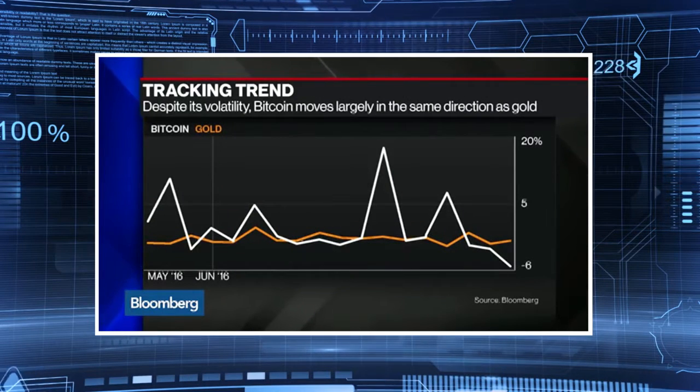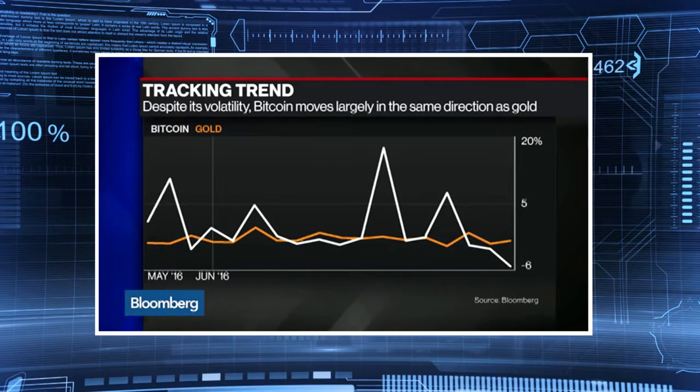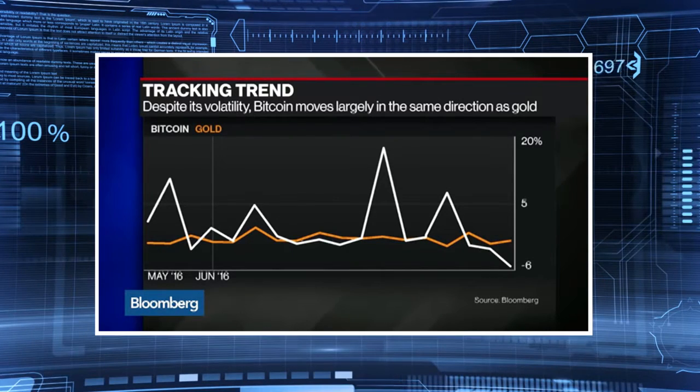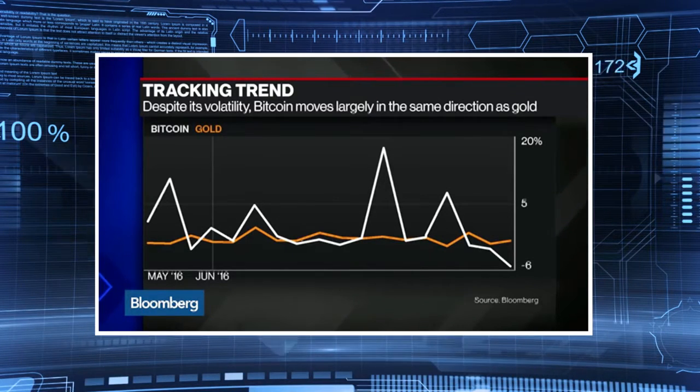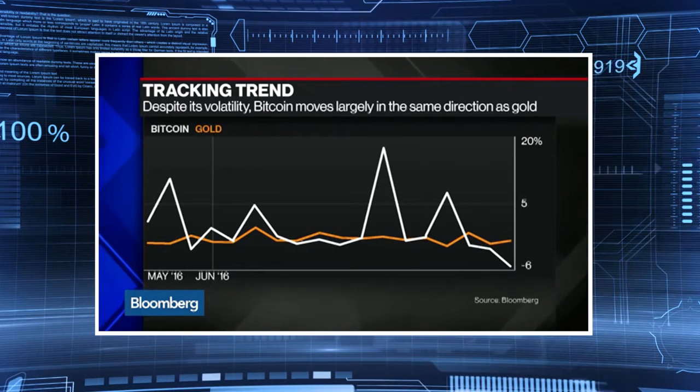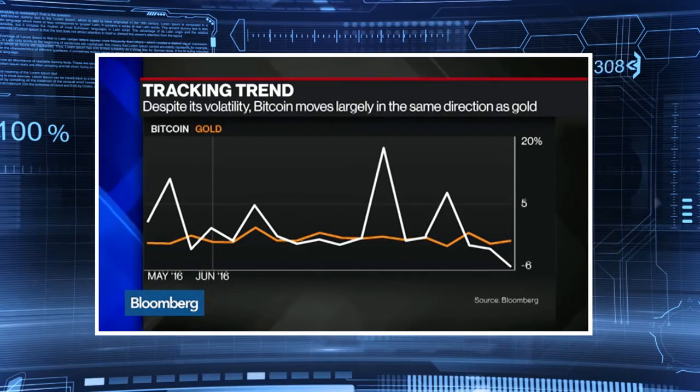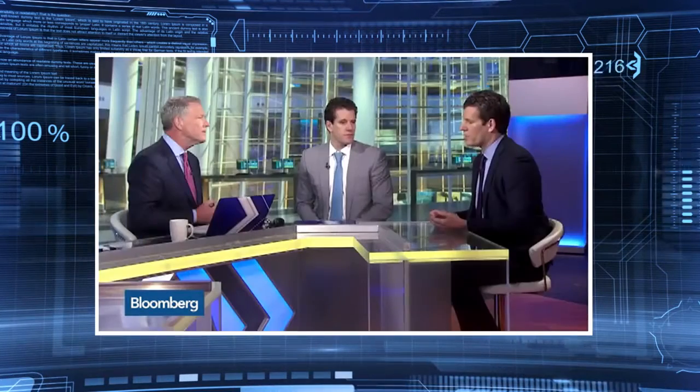We've actually been saying that for many years — we feel that the killer Bitcoin app is really a store of value, and it's starting to behave just like that. This chart shows that Bitcoin is starting to move now with gold. We think Bitcoin is a better form of gold. According to predictions by finance gurus, Bitcoin's value will be highly appreciated by August 2016, at approximately $1,000. Bitcoin investment is a good source of income and a much profitable investment option for a growing economy like India.